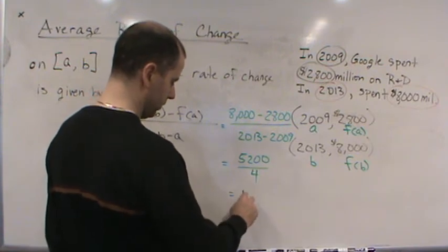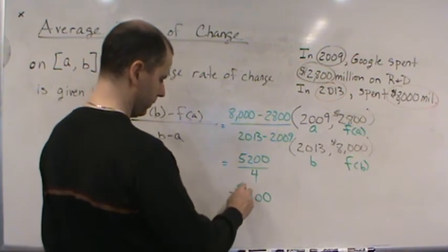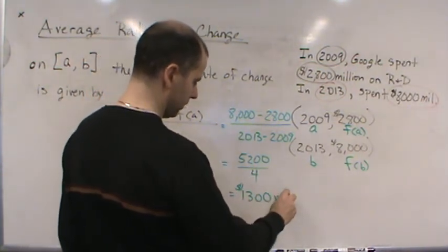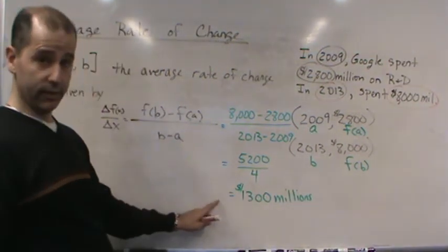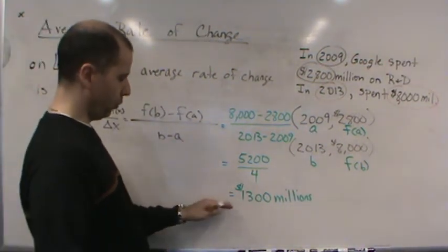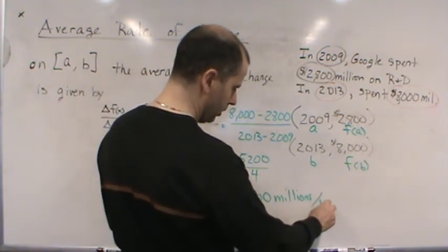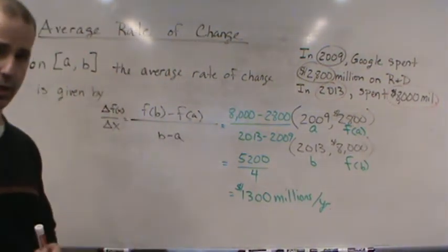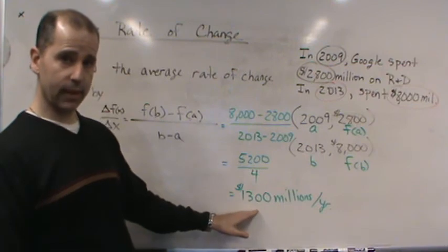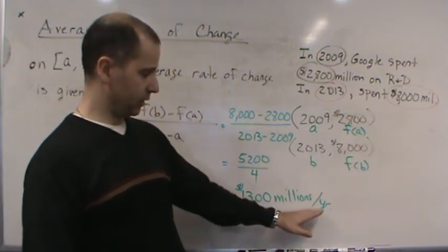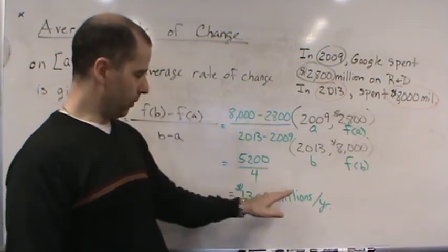The units - this is where you have to be careful. The units are dollars per year. That's the average rate of change: how the money they're spending on R&D is changing with the year. It's change in y over change in x. So the average rate of change is 1300 million, or 1.3 billion dollars per year.